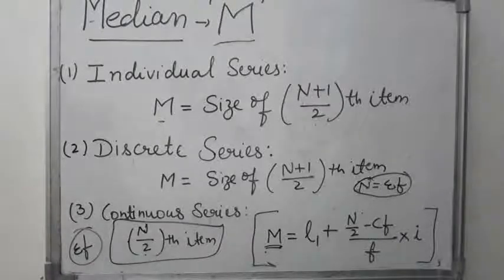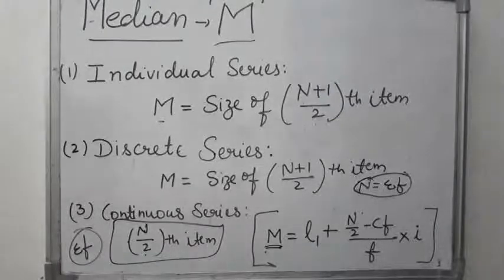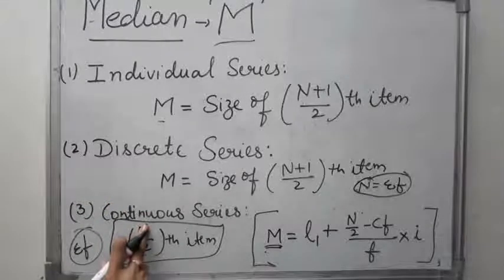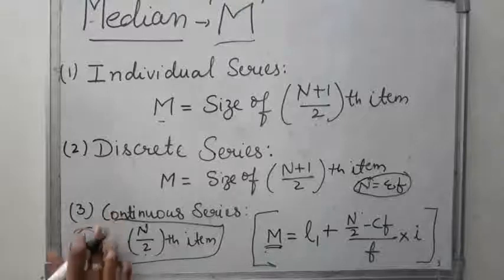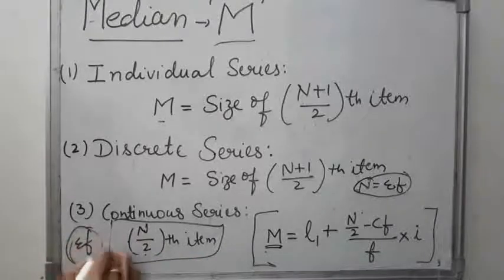Third is the continuous series. In continuous series, class intervals are given. For the median, we first arrange the data in ascending or descending order, then convert frequencies into cumulative frequency — same as we did in discrete series. Then the median class of the series is identified using the formula N/2, where N is summation of f.